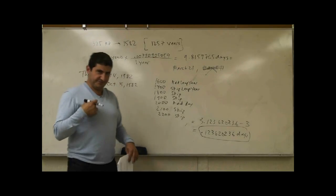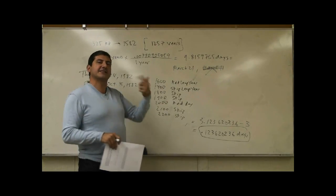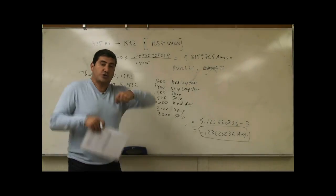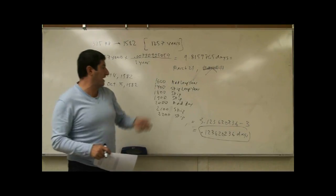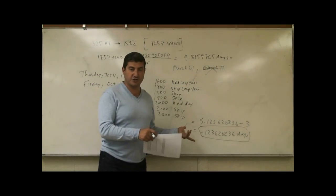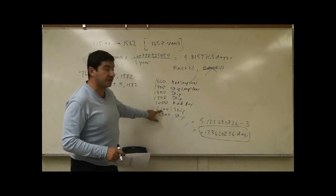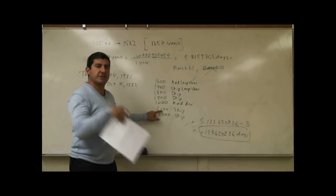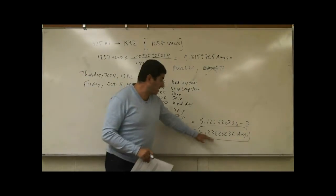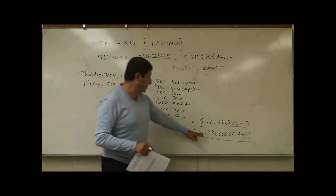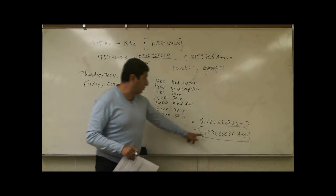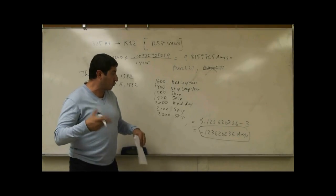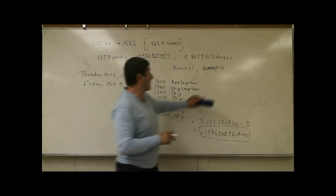So during our lifetime, since we live around 2,000, we're not going to experience one of these years that you're supposed to add a day but you're not going to add because of the Gregorian correction. We're not going to experience that. Next time that they'll experience it is 2,100. You're supposed to add a day, but you're not going to add it because of the Gregorian correction. Now, the correction is not perfect because after 400 years, you still have overcounted 0.123620236 days. So what are you going to have to do?